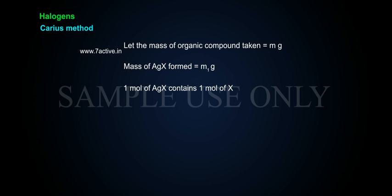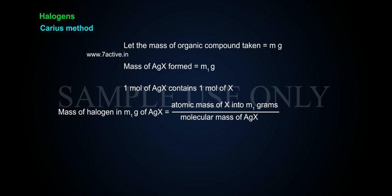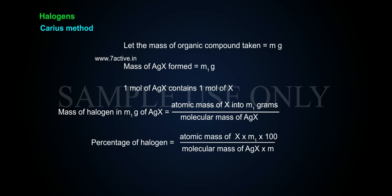One mole of AgX contains one mole of X. Mass of halogen in m1 grams of AgX equals atomic mass of X multiplied by m1, divided by molecular mass of AgX. Therefore, percentage of halogen equals: (atomic mass of X × m1 × 100) / (molecular mass of AgX × m).